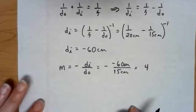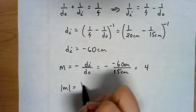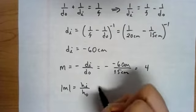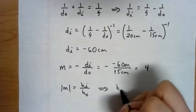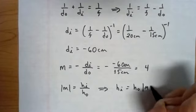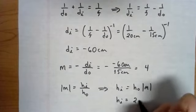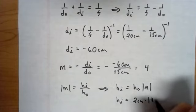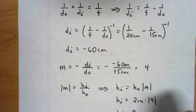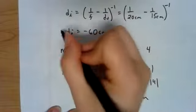So to actually find the height again, the absolute value of our magnification is the image height over the object height. So our image height is the object height times the magnification absolute value. So our image height is just going to be 2 centimeters times the magnification of 4. So our image height is going to be 8 centimeters.